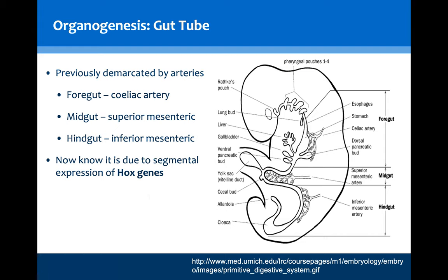The three divisions of the gut were initially thought to be demarcated and derived due to the arteries that supply them. These branches of the aorta are the celiac artery, the superior mesenteric and the inferior mesenteric arteries. This is very commonly assessed in exams as you will be asked to outline the vascular supply of a structure within the adult body. Through latest understanding, we recognise that the division of the gut into these three segments is actually determined by expression of Hox genes, which are sequential genes that through a layered approach of expression define different parts of the body from the cranial to the caudal end.